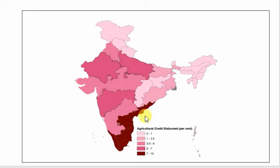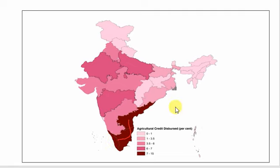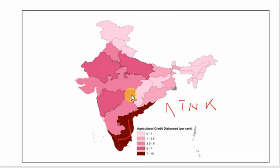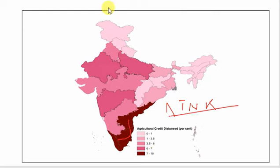In this credit disbursement map for India, the dark-colored portions show states that have disbursed the maximum amount to agriculture. This dark-colored area covers Andhra Pradesh, Tamil Nadu, and Kerala. These three states have disbursed the maximum agricultural loans. The rest of India has disbursed very little credit — you can see the ranges: 0 to 1 percent in light pink, then 1 to 3.5, then 3.5 to 6, and the highest category is the three dark-colored states mentioned.